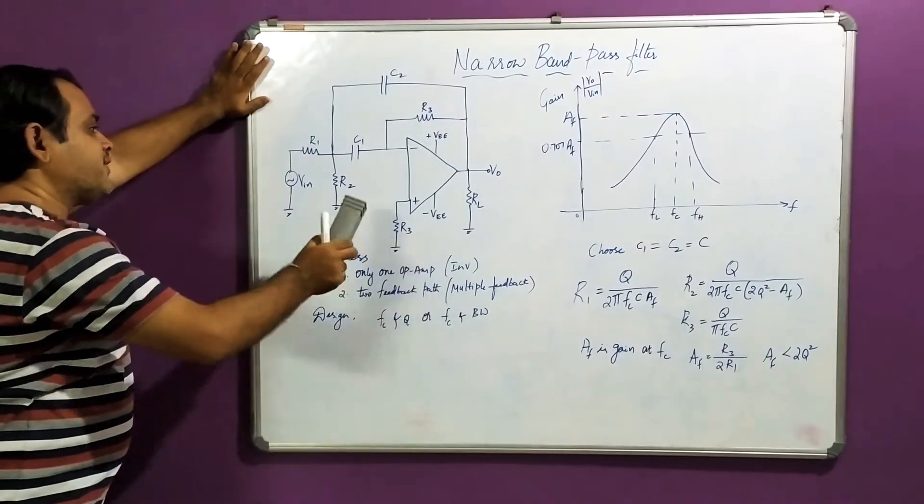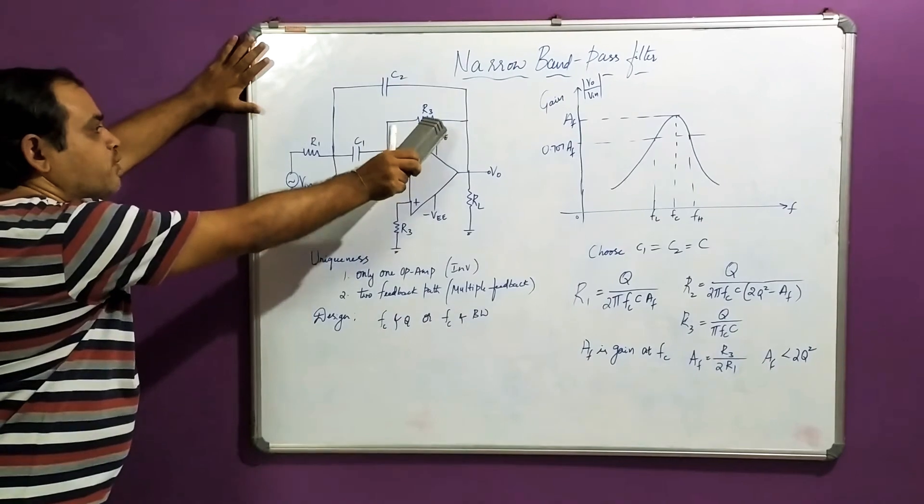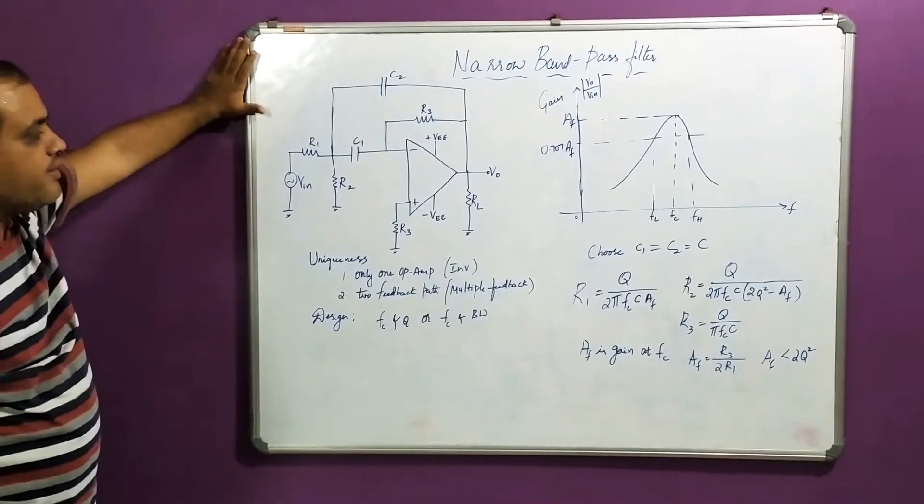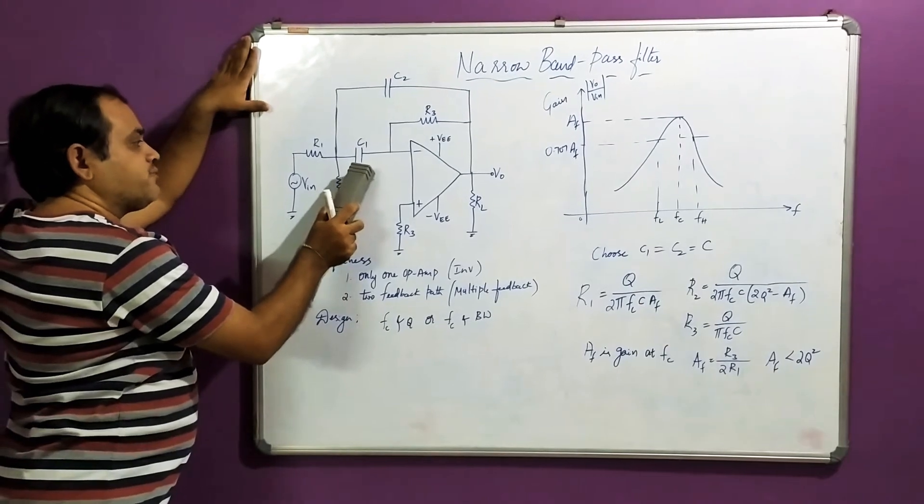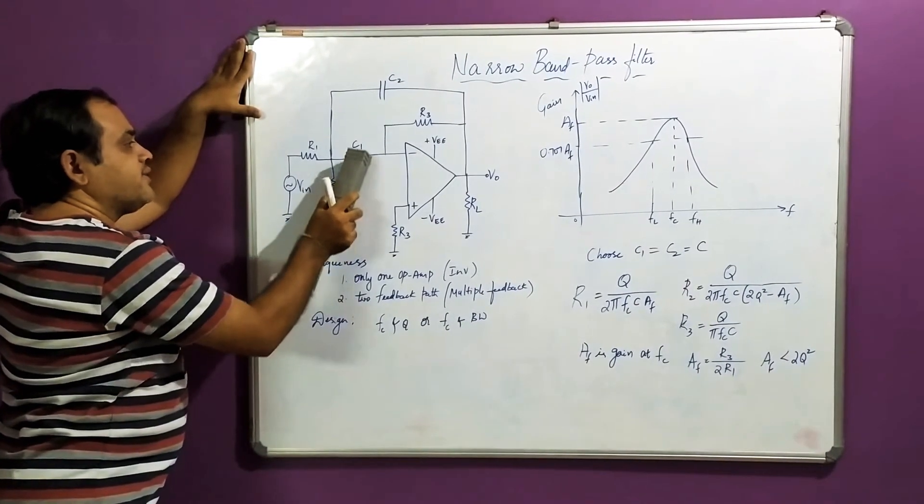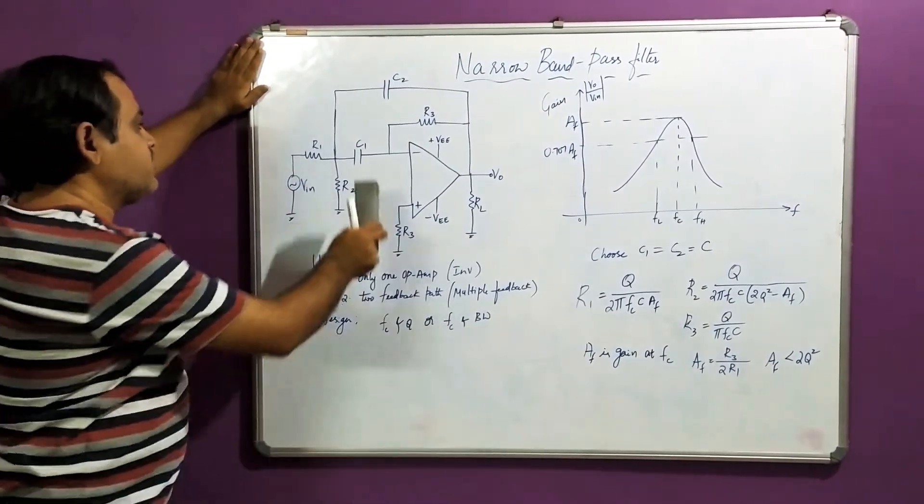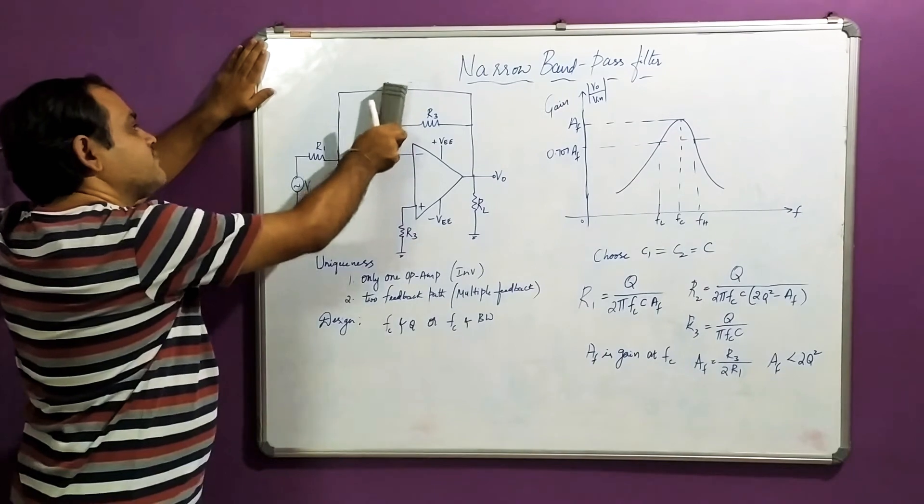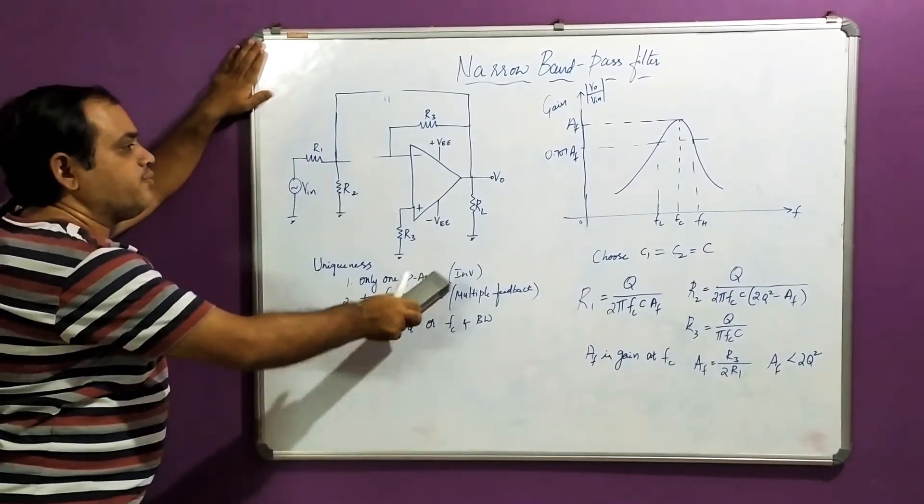If you observe this circuit diagram, it consists of two resistors and two capacitors and one feedback resistor. During low frequencies, lower frequency values, these two capacitors will have high reactance. This will become open. So as soon as they get opened, you can observe...